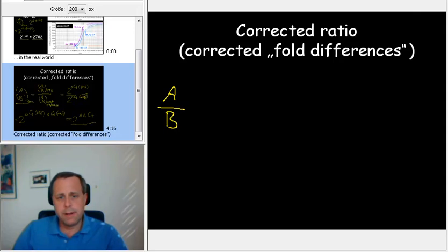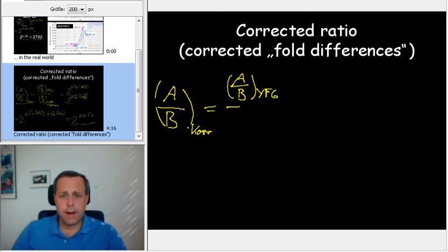...corresponds to the ratio that you measure for your favorite gene divided by the ratio of A over B that you measure for your control gene, or for your reference gene if you prefer this kind of expression.